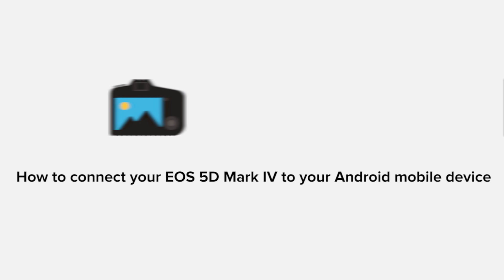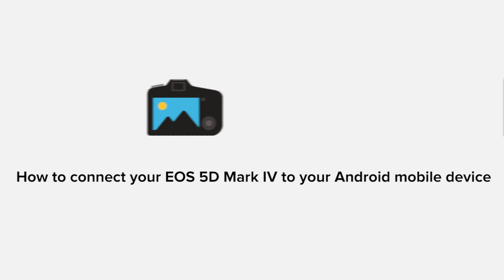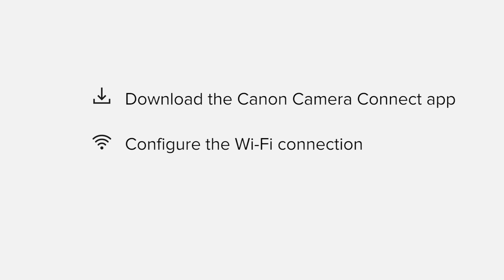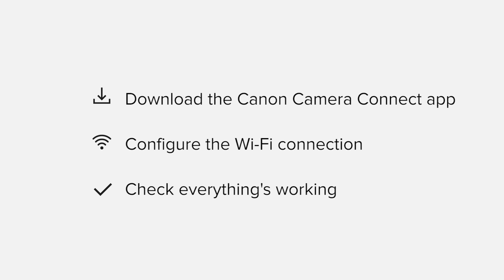In this video, we'll take you through the steps required to connect your Android smartphone or tablet to the Canon EOS 5D Mark IV. We'll start by downloading the Canon Camera Connect app from Google Play before configuring the Wi-Fi connection. Finally, we'll go through the basic features of the app and make sure that everything's working as it should. All up, it'll take about 5 to 10 minutes to get up and running.